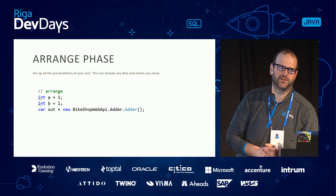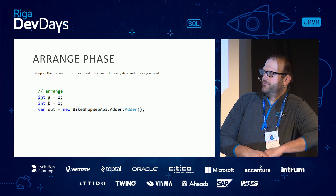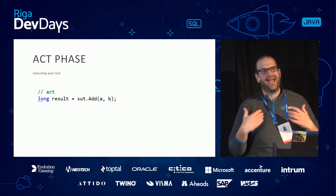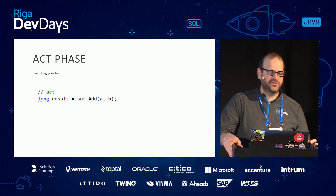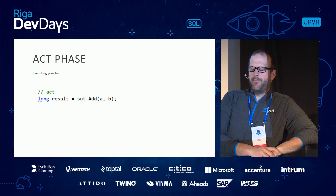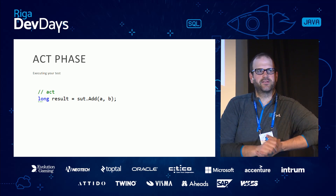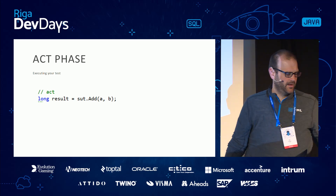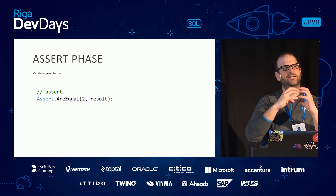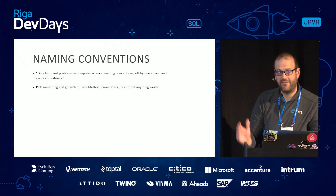We're only checking one thing and exercising one system under test. The arrange phase is where we specify all preconditions of our test — in this very basic example, just setting some integers and creating a new class. The act phase is when we actually execute and exercise our system under test — 'SUT' is a convention you'll see a lot in unit testing literature. Last, the assert phase — we're just making sure the result is what we expect it to be.